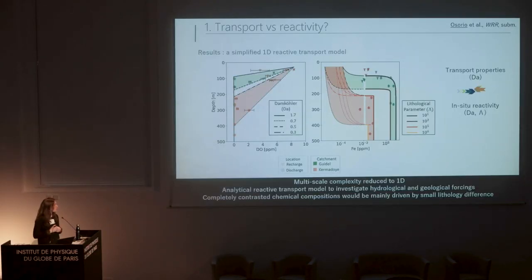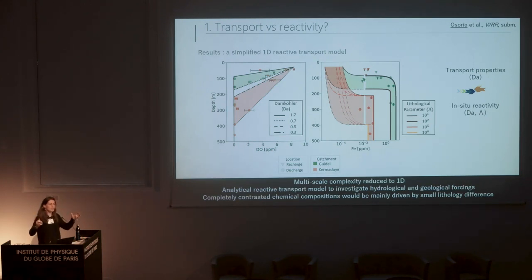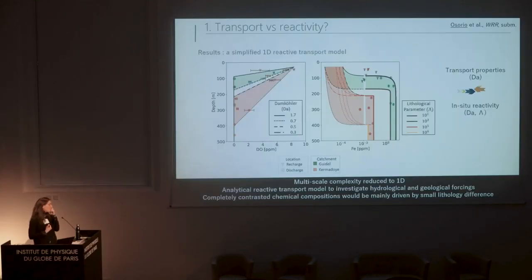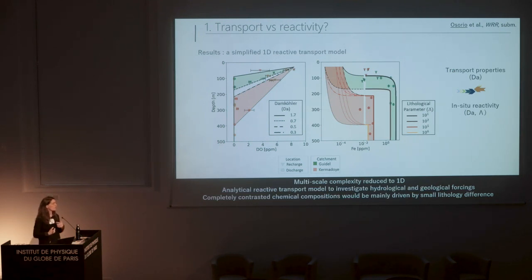To conclude on this study: we found a nice way to look at the huge heterogeneity of catchments and reduce it to only one dimension — chemistry with depth. With this, we used an analytical reactive transport model to investigate and decipher between the hydrological and geological forcings. We showed that completely contrasted chemical compositions between two quite similar catchments are driven by small mineralogical differences.